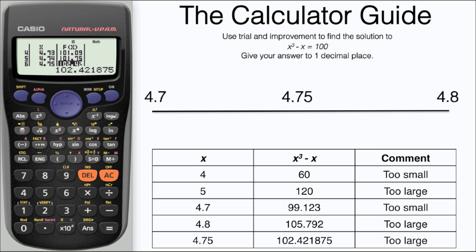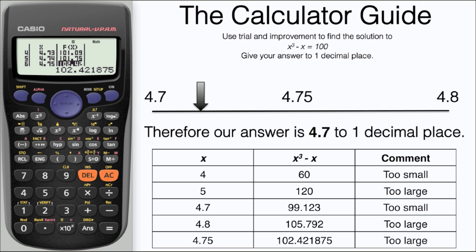Our actual value is somewhere where the arrow is on a number line, and we can see quite clearly on the number line that our value would round down to 4.7, and that would be our final answer: 4.7 to one decimal place.